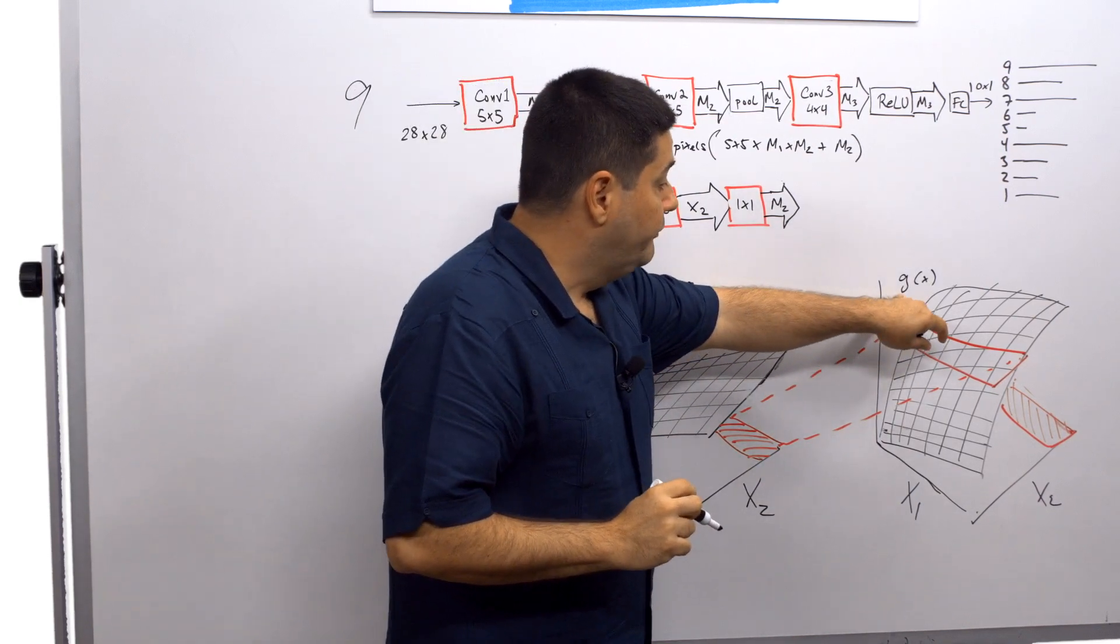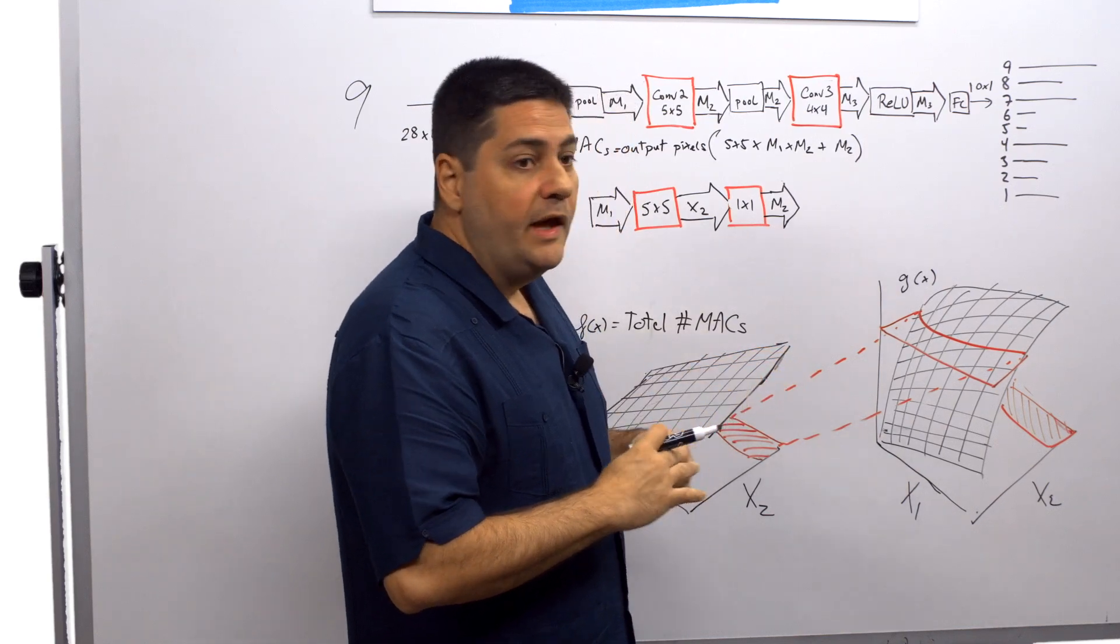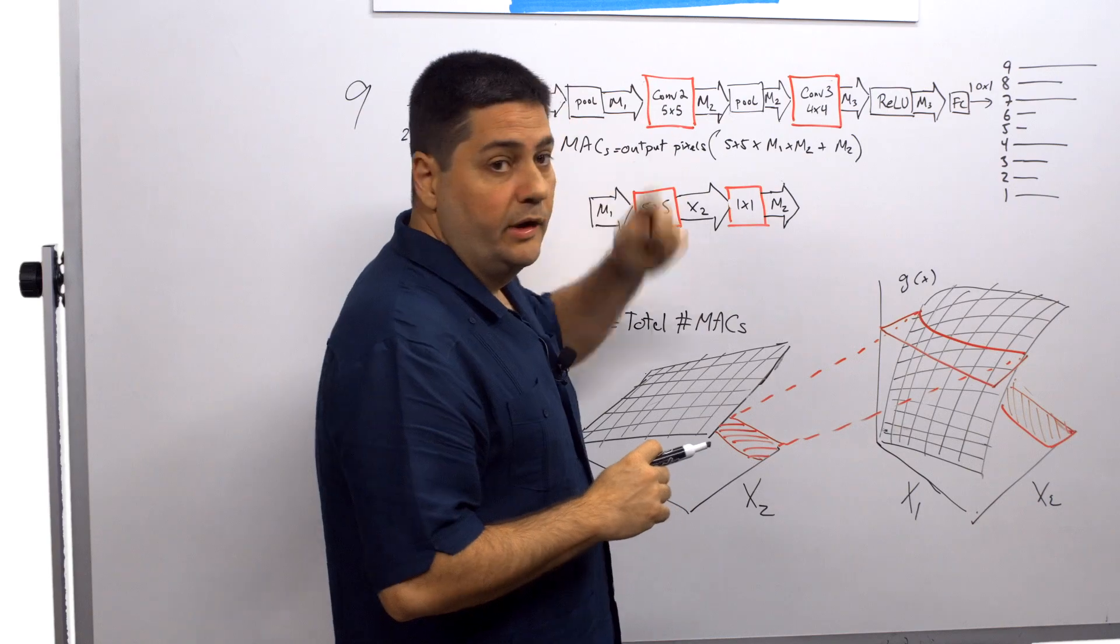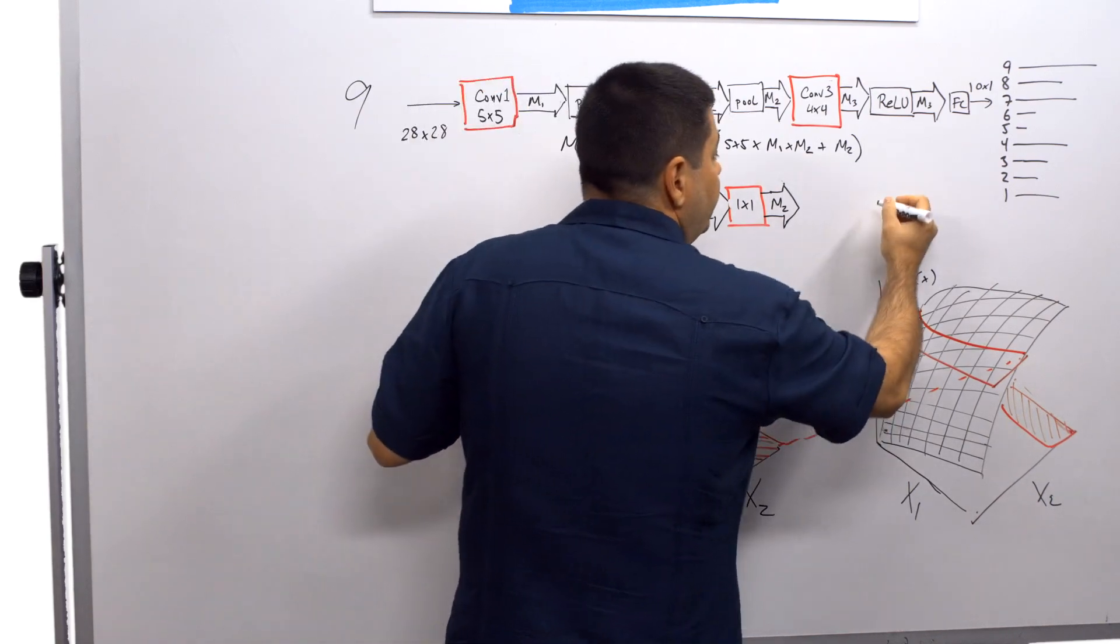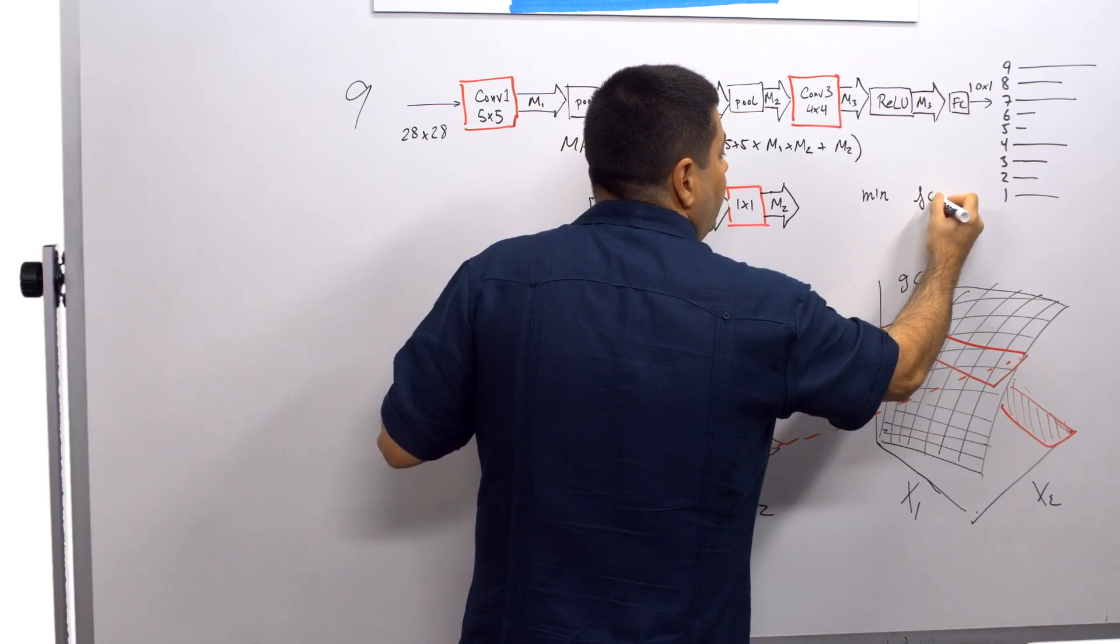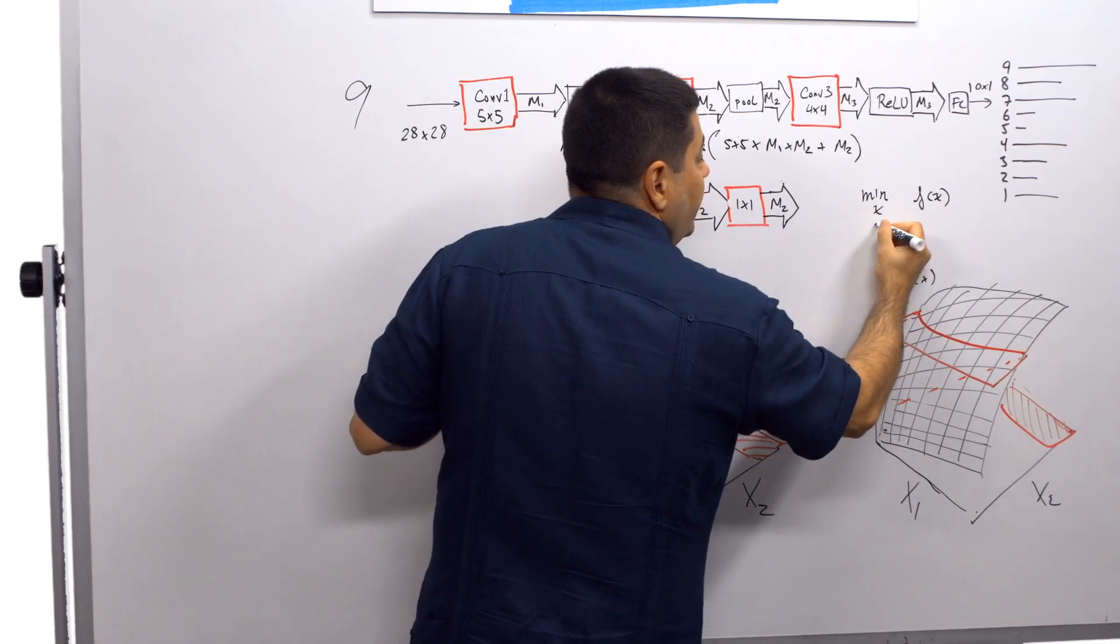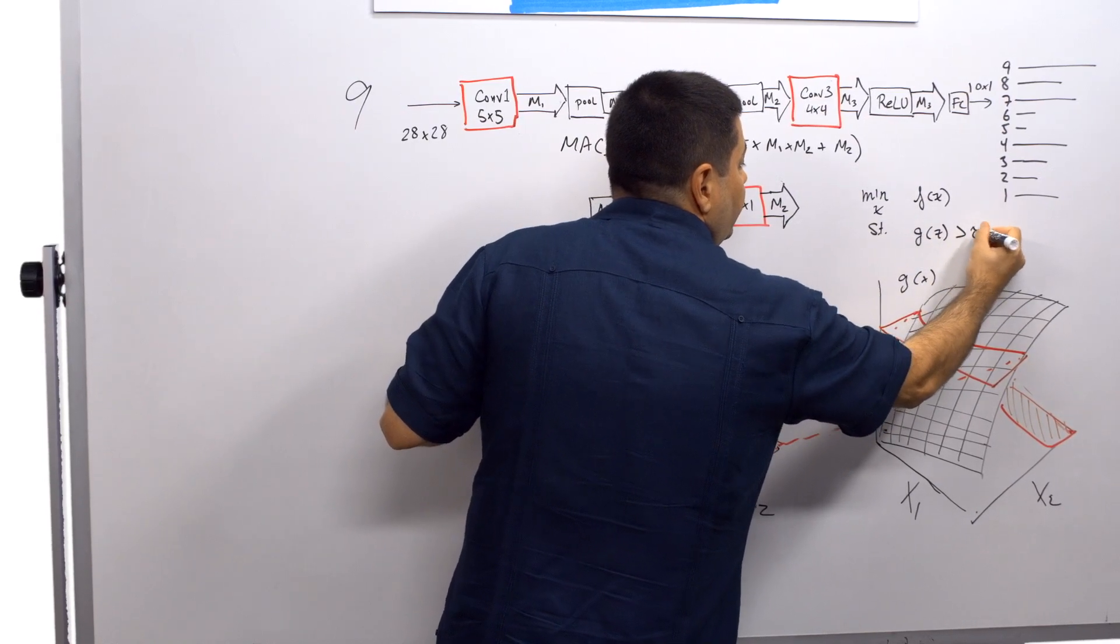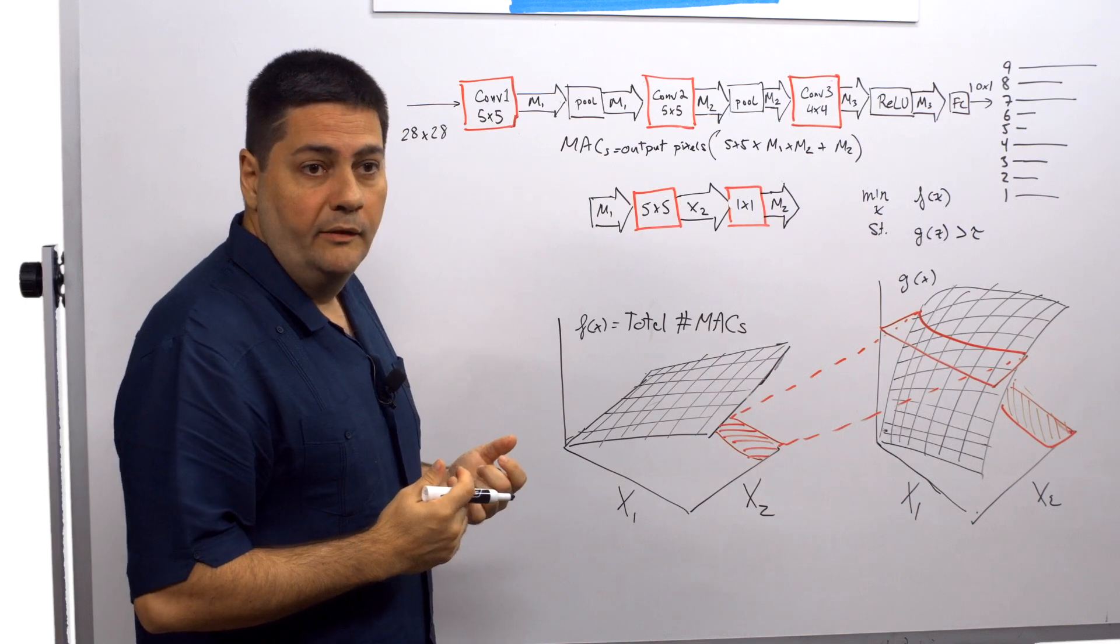We're also then going to create a function of x as well, g of x, that gives you the accuracy of the network as you change x1, x2, x3. So that allows us to create an optimization problem of minimizing the cost f of x over x such that the accuracy is above a certain threshold. And that's the optimization problem that we solve.